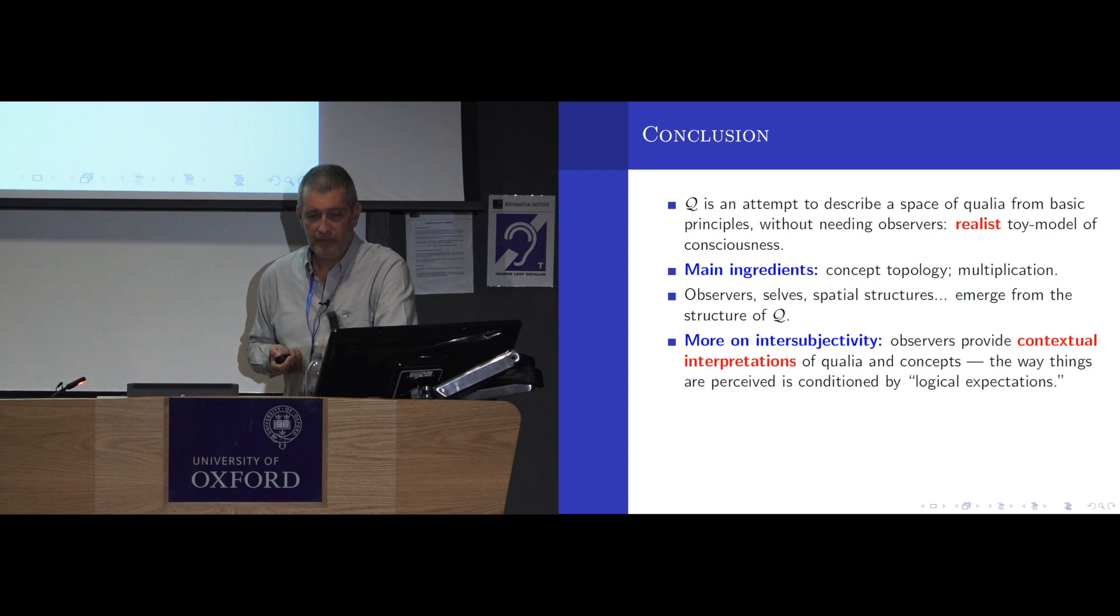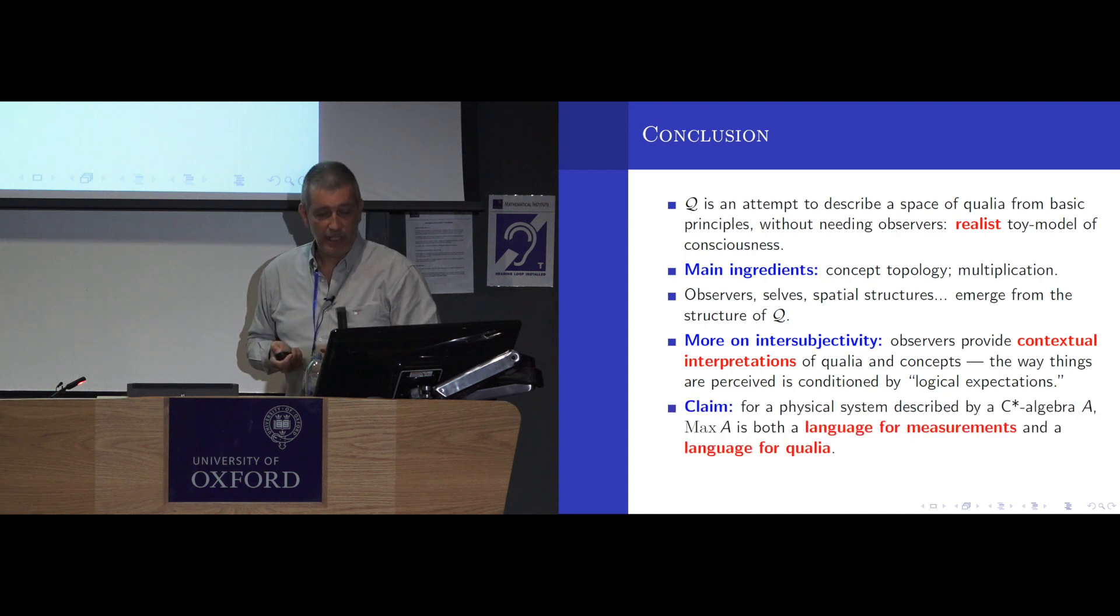There's also intersubjectivity. Well, there are canonical mappings from arbitrary qualia to the qualia of specific observers. And from the concepts to the qualia of specific observers. And you can think of this in topology as a kind of expectation. So, it's the way you perceive things in the world when you're sticking to a particular observer. It's, well, it's a well-known thing in psychology that your expectations affect your perceptions.